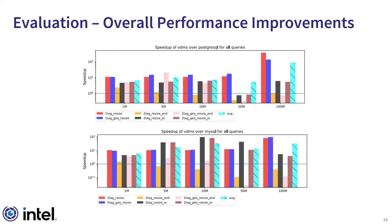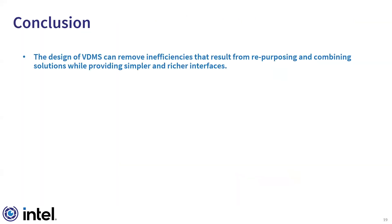We have summarized the overall performance improvements of VDMS. The top figure summarizes results comparing VDMS and PostgreSQL: VDMS provides up to 364x speedup in certain queries and an average improvement of about 85x. The bottom figure summarizes improvements over MySQL: VDMS provides up to 96x speedup and an average improvement of 31x in throughput. Most of these performance improvements can be attributed to the design principles of VDMS, which eliminates the need to combine and repurpose systems designed for data types other than visual data, removing inefficiencies that result from a forced integration of components designed for a different range of applications.